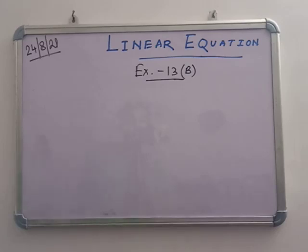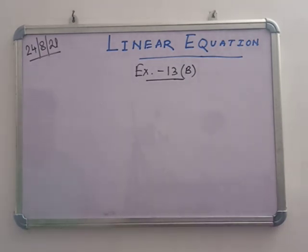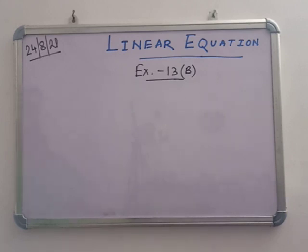Today we are going to discuss the next exercise of linear equations, 13b. In 13b, the difference from the previous exercise is that the variables are on both sides. In the previous exercise, we only saw that the variables were on one side. But in this exercise, we can see that the variables are on both sides.